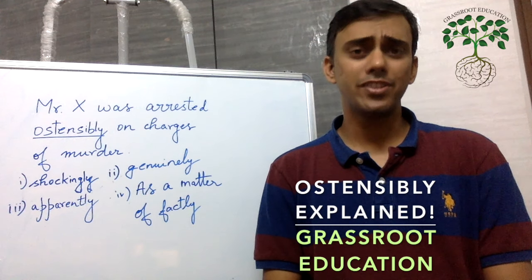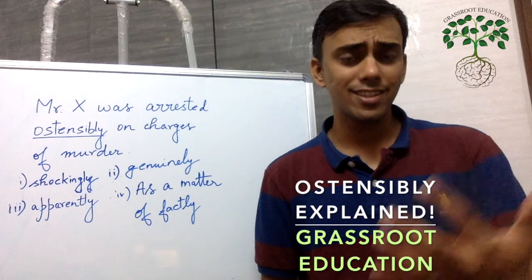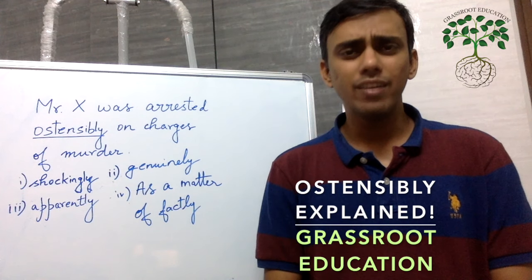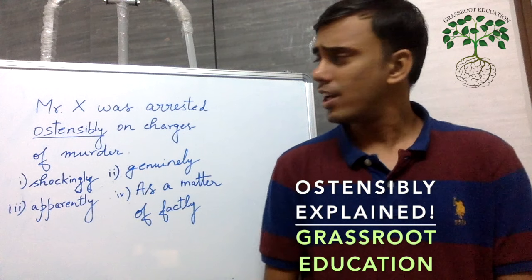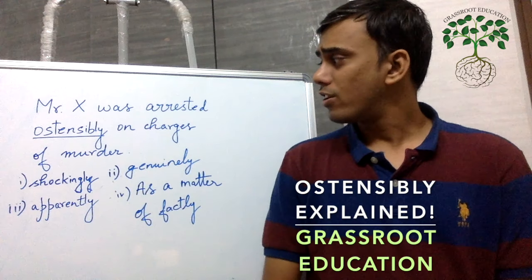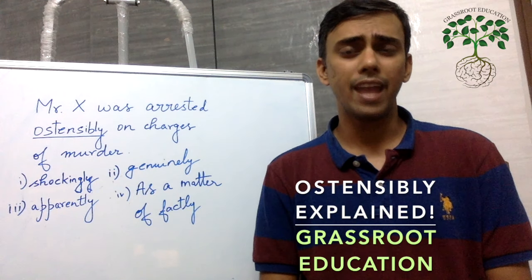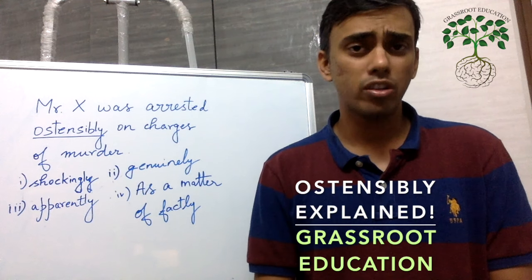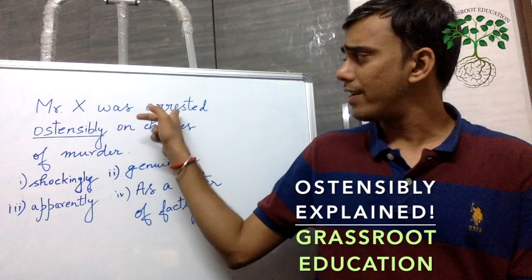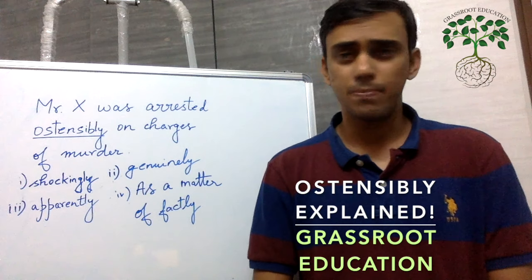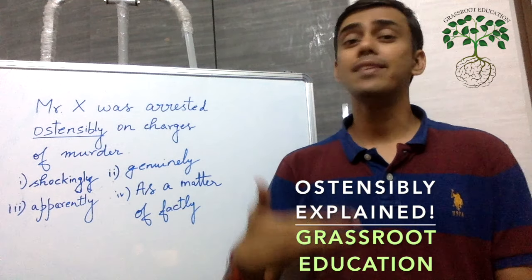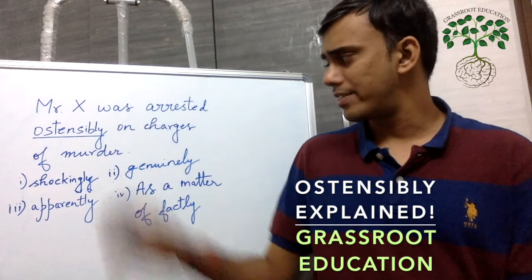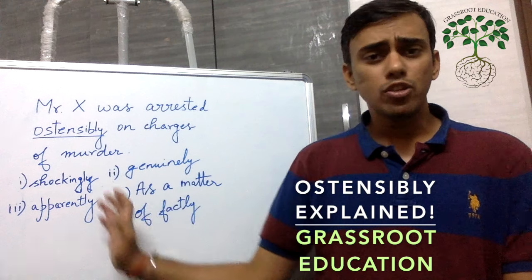This particular question focuses more on improving your lexical resource or vocabulary. There isn't much grammar in play here. However, just for our interest, what kind of a word is ostensibly? Ostensibly is an adverb, which means it gives you more information about the verb. The verbs here are 'was' and 'arrested' — 'was arrested ostensibly on charges of murder' — so ostensibly is adding more information about 'was arrested'.